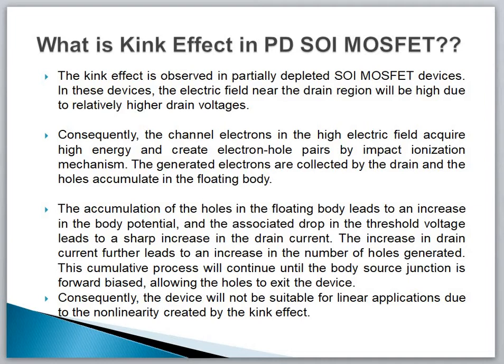Consequently, the channel electrons in the high electric field acquire high energy and create electron-hole pairs by the impact ionization mechanism. The generated electrons are collected by the drain and the holes accumulate in the floating body. The accumulation of holes in the floating body leads to an increase in the body potential, and the associated drop in threshold voltage leads to a sharp increase in drain current. The increase in drain current further leads to an increase in the number of holes generated. This cumulative process continues until the body-source junction is forward biased, allowing the holes to exit the device.